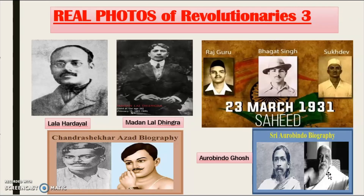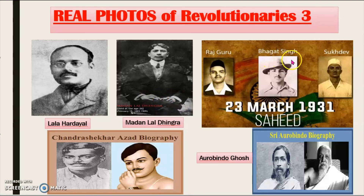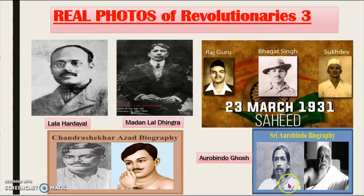Next, the real photos of revolutionaries. This is Lala Hardiyal. This is Madan Lal Dhingra. Then these three very famous revolutionaries — Rajguru, Bhagat Singh, and Sukhdev. This is Chandrasekhar Azad — this is a real picture of him and this is his painting. And this is Aurobindo Ghosh.